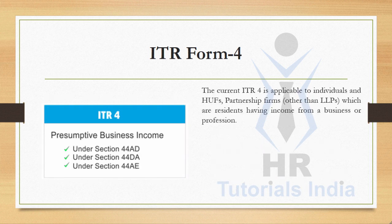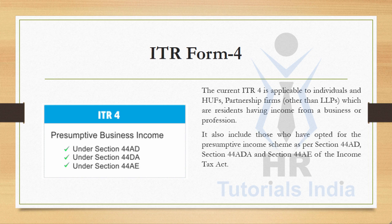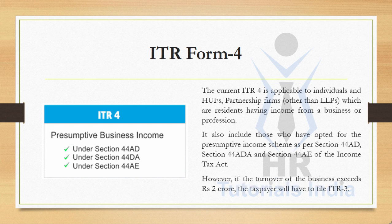ITR Form 4 is applicable to individuals and HUF partnership firms other than LLPs which are residents having income from a business or profession. It also includes those who have opted for the presumptive income scheme as per Section 44ADA and Section 44AE of the Income Tax Act. However, if the turnover of the business exceeds 2 crores, the taxpayer will have to file ITR 3.